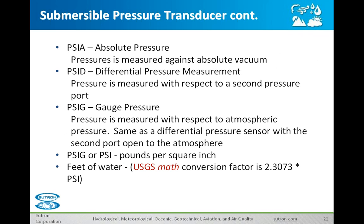There are a number of different types of pressure transducers. There's the absolute type — this measures pressure up against it, and if it's submerged in water, it measures the weight of the water. But it is also measuring the barometric pressure as well — the weight of the air does affect that. So to get actual water level readings, you have to have a barometer at the surface and subtract off the barometric pressure for each reading.